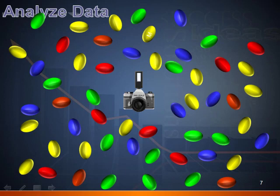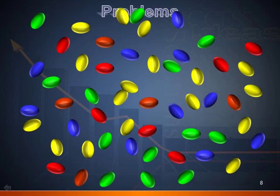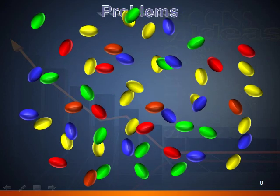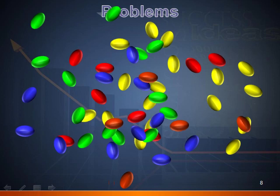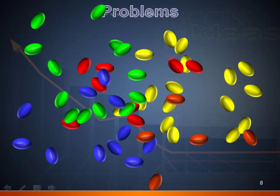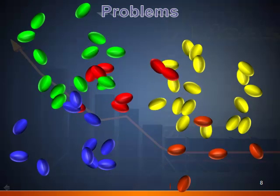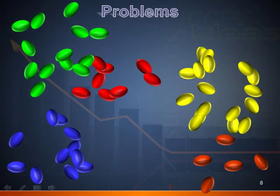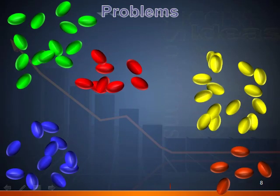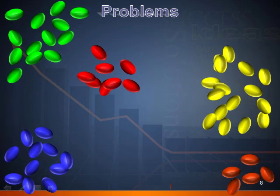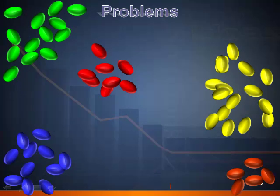Then you can start to gather information and analyze each problem. Next, you need to identify and categorize the problems you are having and establish how many times each problem occurs over a given period of time. There — that looks better already, doesn't it?